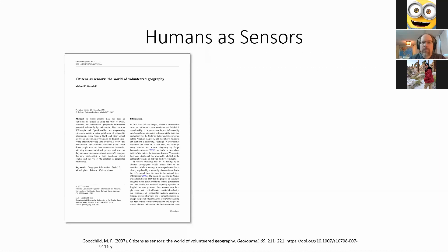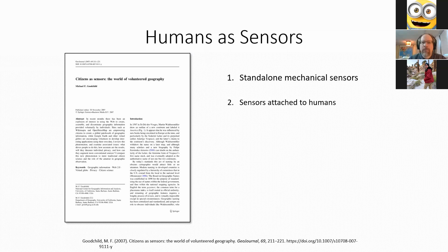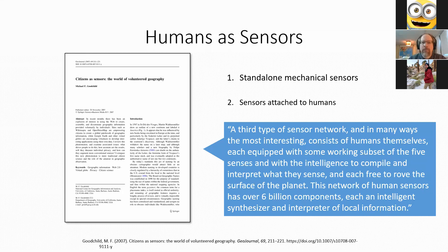I'll begin by discussing a 2007 paper by Michael Goodchild titled 'Citizens as Sensors,' in which he discusses this growing world of volunteer geographic information — data freely submitted by individuals that is tied to a geographic point. He identifies three types of sensors in geographic research: a standalone mechanical sensor like a weather station or seismograph, a sensor attached to humans such as someone driving with a GPS unit, and then a third type.